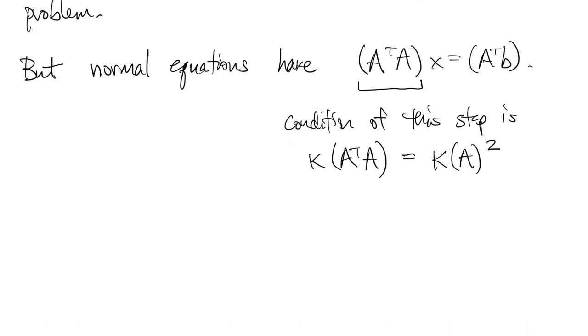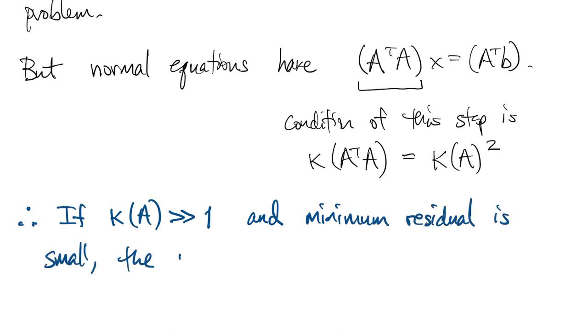So you see, this might be much larger than the condition number of the original problem. So if the condition number of the matrix is big, and the residual at the minimizer is small, then the normal equations are unstable.